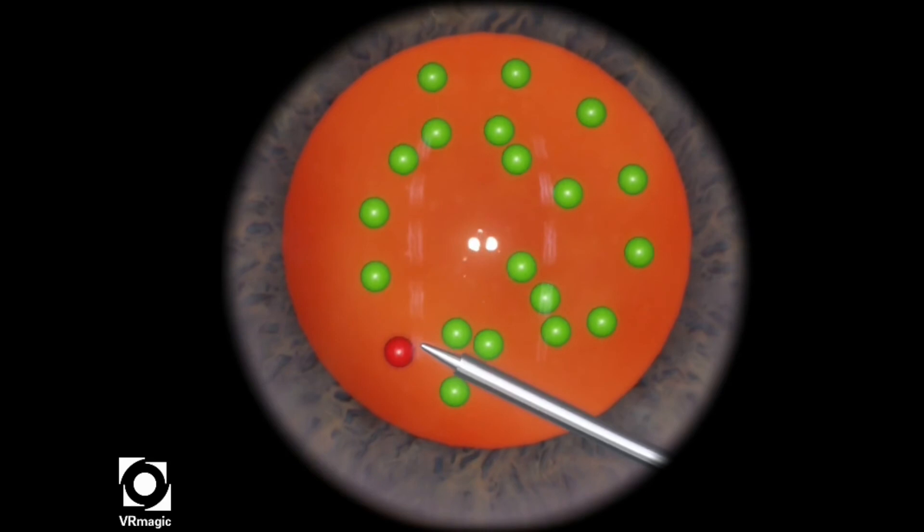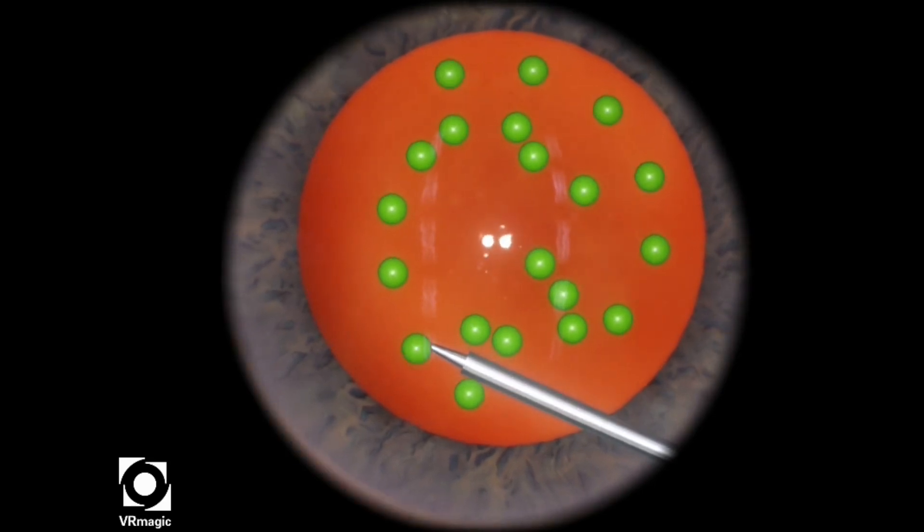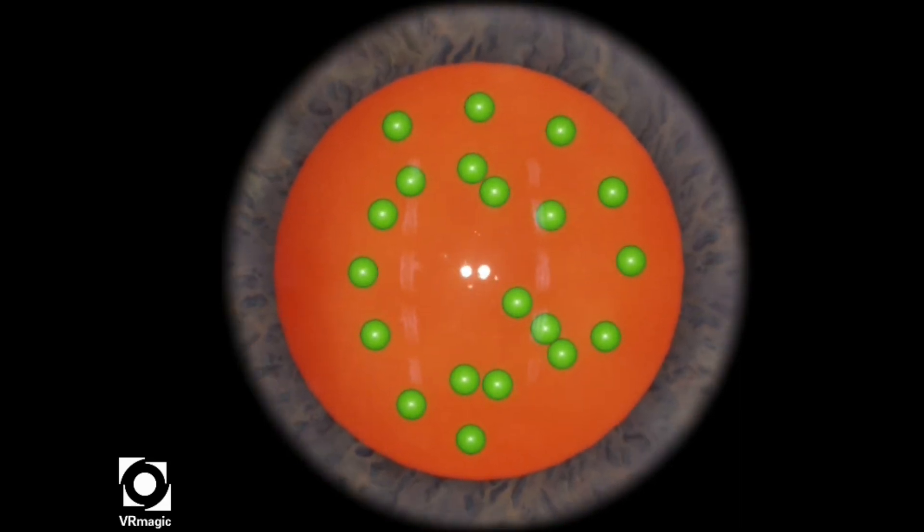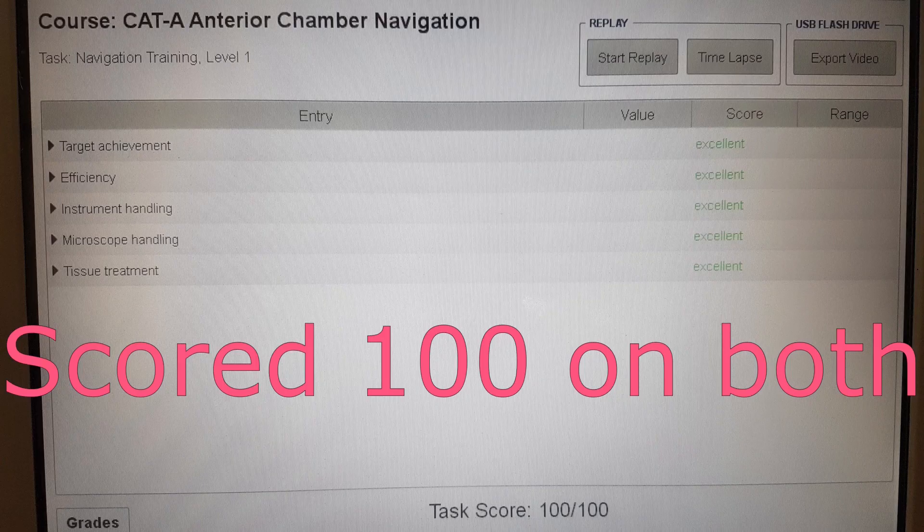And that's the last sphere. There we go. This spiral pattern is completely gone but I scored 100 on both tasks.